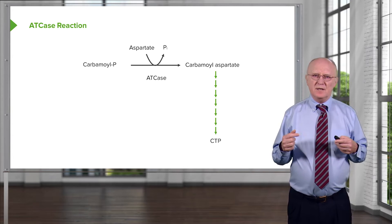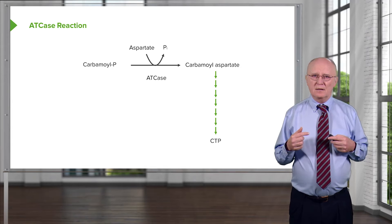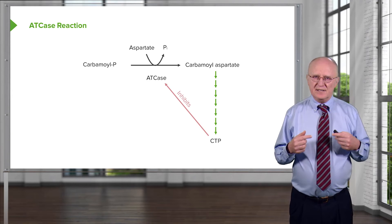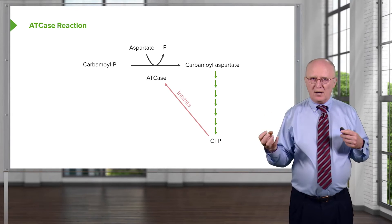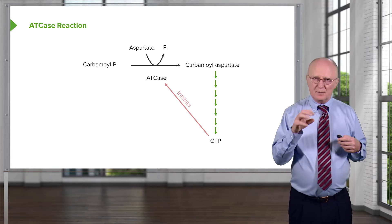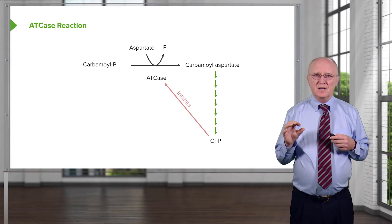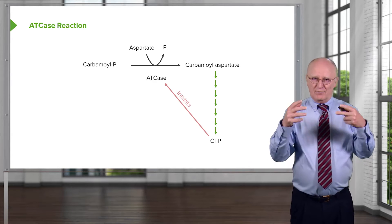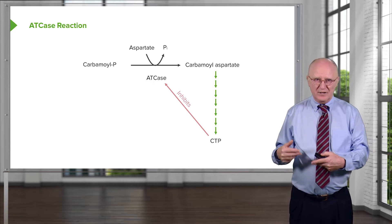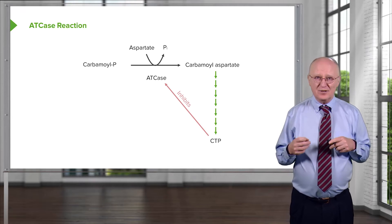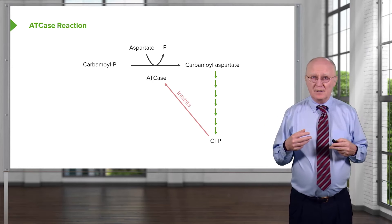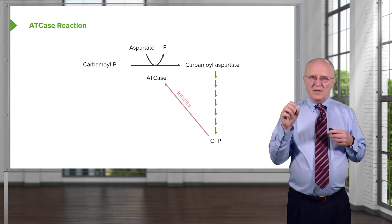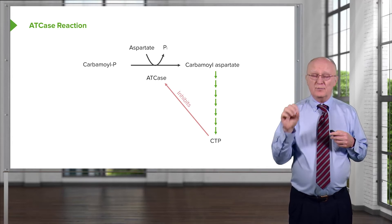CTP is what we call the end product of the pathway. CTP has an important function here — it inhibits the action of ATCase. This inhibition of an end product of a pathway inhibiting an enzyme early in the pathway is known as feedback inhibition. This feedback inhibition is important for controlling how many pyrimidine nucleotides are made. If we have too much CTP, we don't want the enzyme cranking out more pyrimidine nucleotides, as that would be a waste of energy and an imbalance. By having CTP feed back and inhibit the enzyme, we see one control that helps the cell balance the appropriate amount of pyrimidine nucleotides to make.